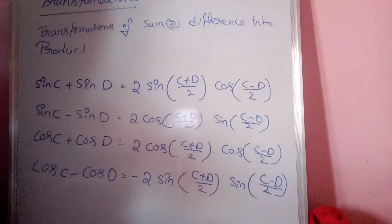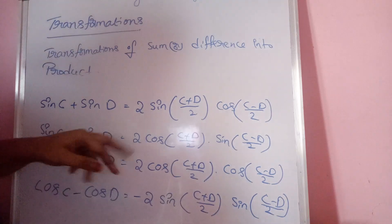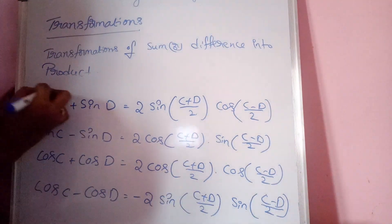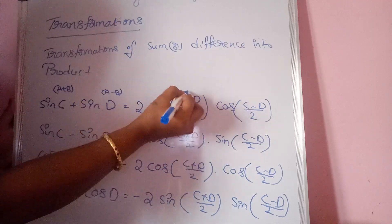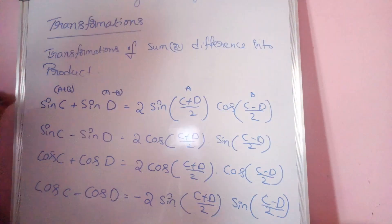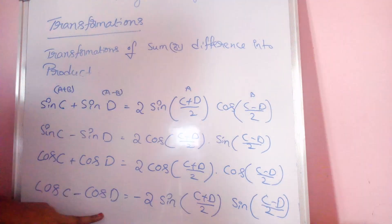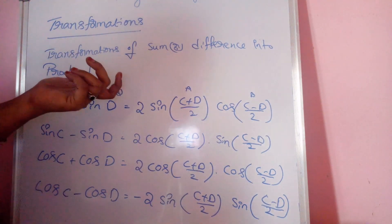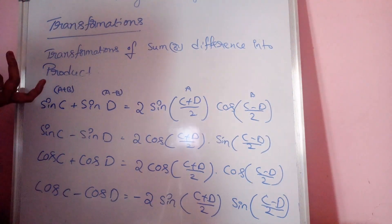Observe these four formulas: C means A+B and D means A−B, so (C+D)/2 means A and (C−D)/2 means B. The above four formulas and these four formulas are the same. We use the sum-to-product formulas to transform sum or difference into products, and the product-to-sum formulas for converting products.